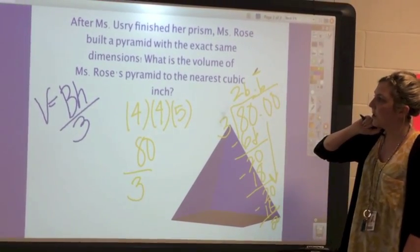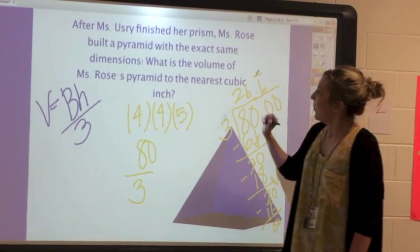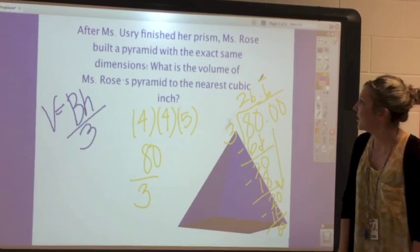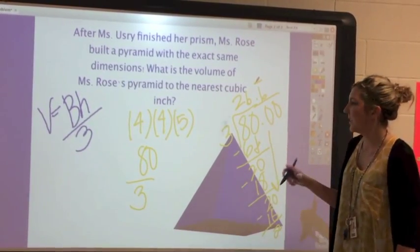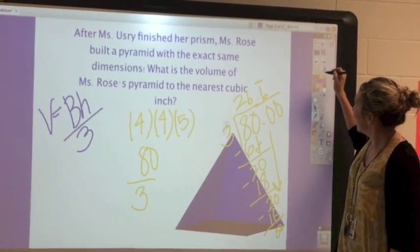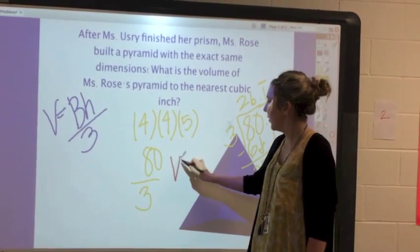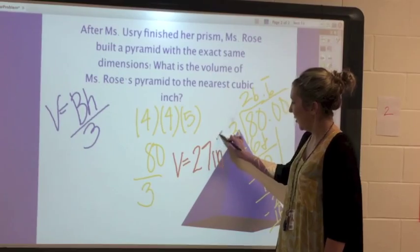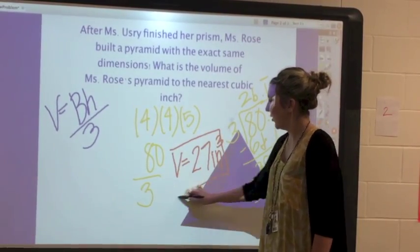Let's look back on our question to make sure we answered it. What is the volume of Mrs. Rose's pyramid to the nearest cubic inch? So we are going to round our decimal to the nearest cubic inch. Our volume would be twenty-seven inches cubed, or twenty-seven cubic inches.